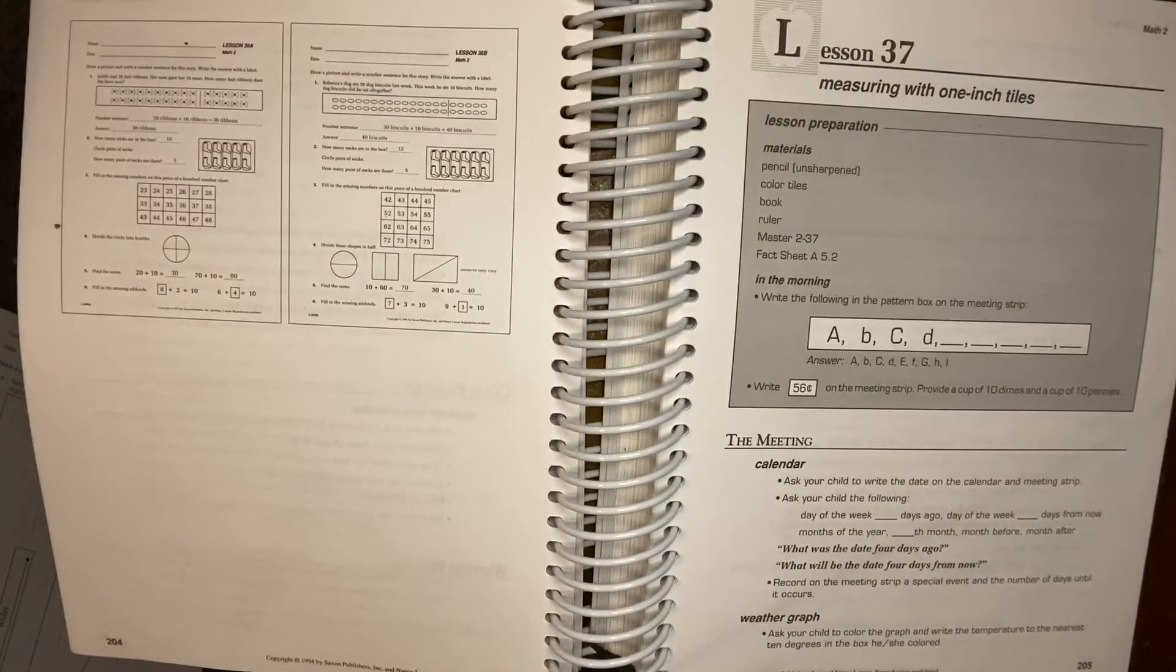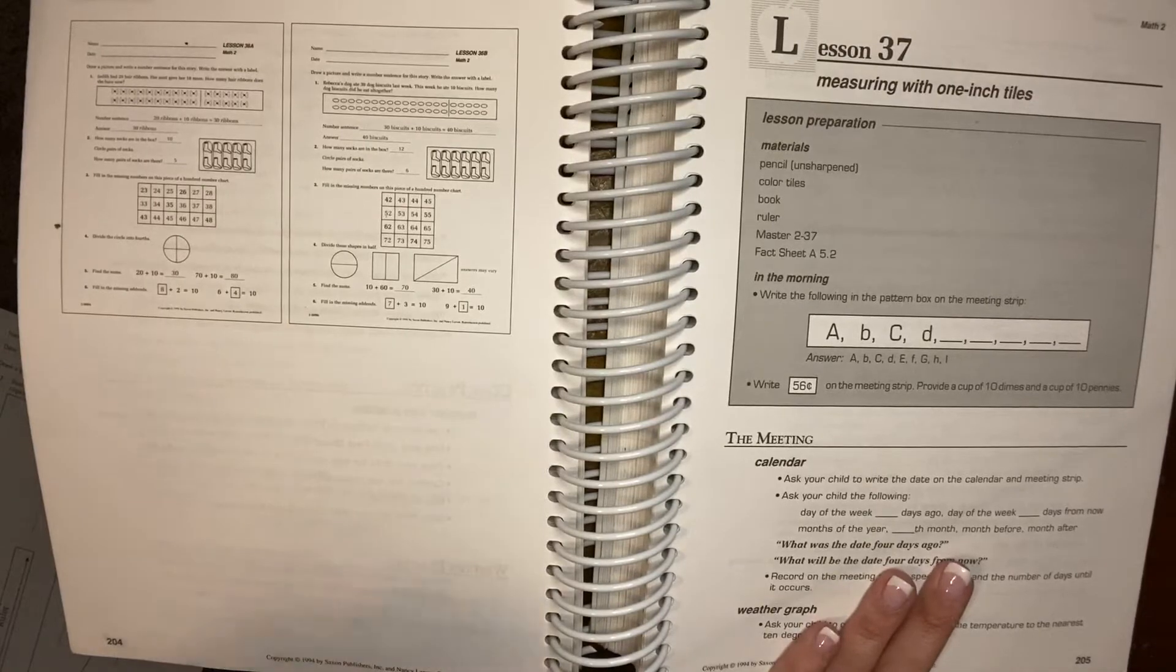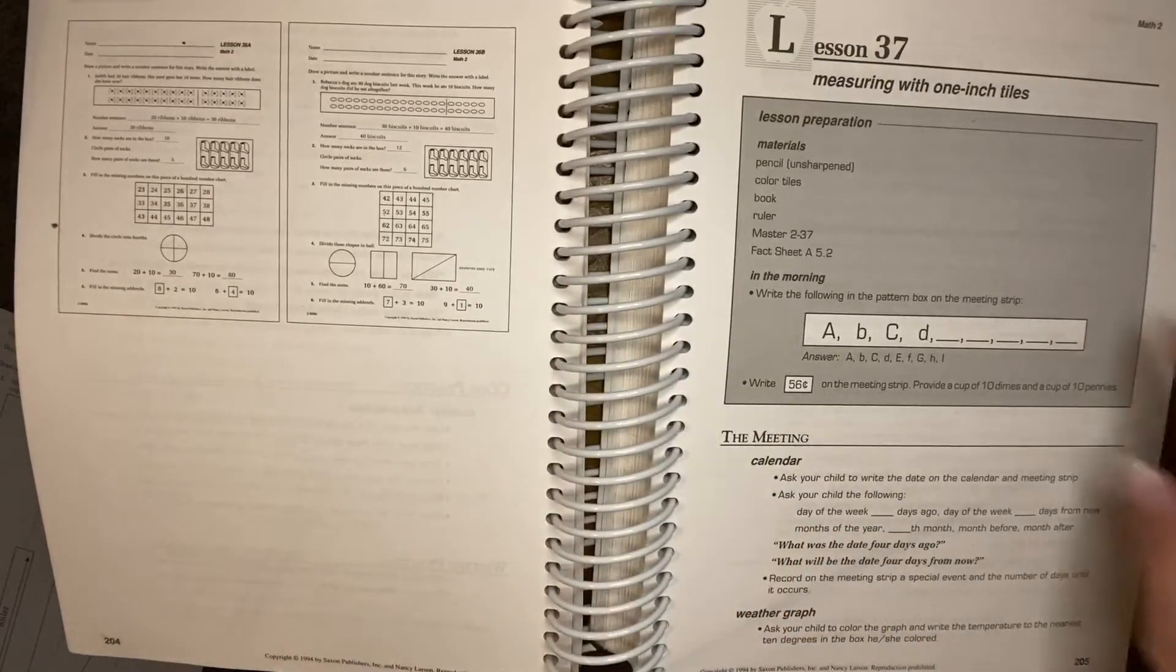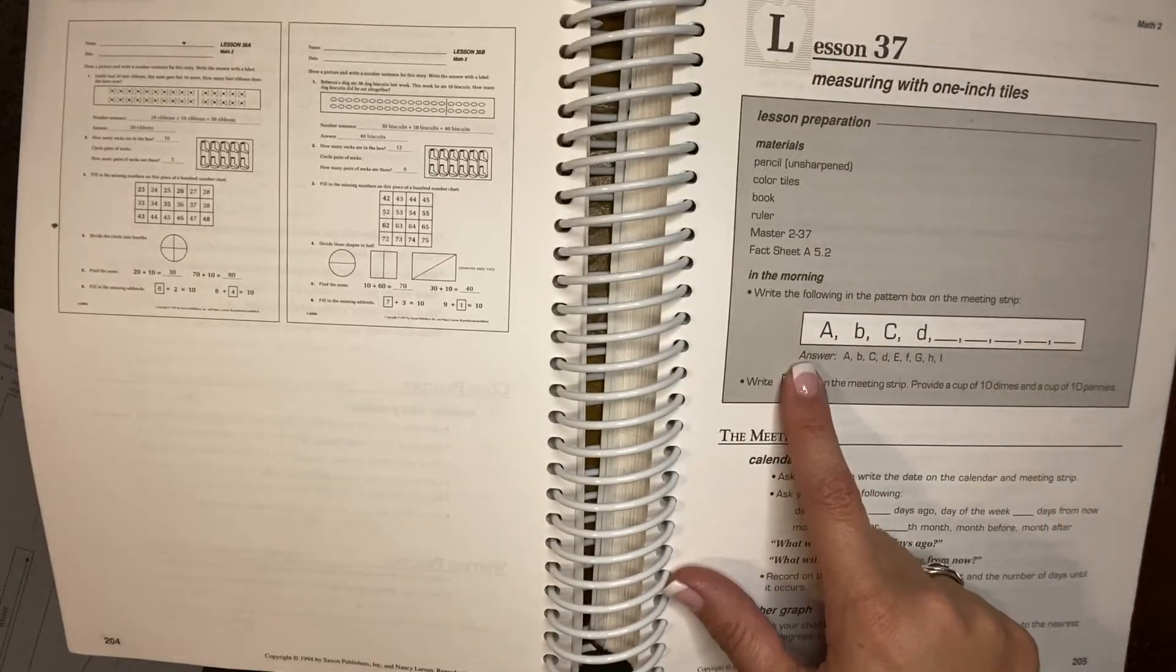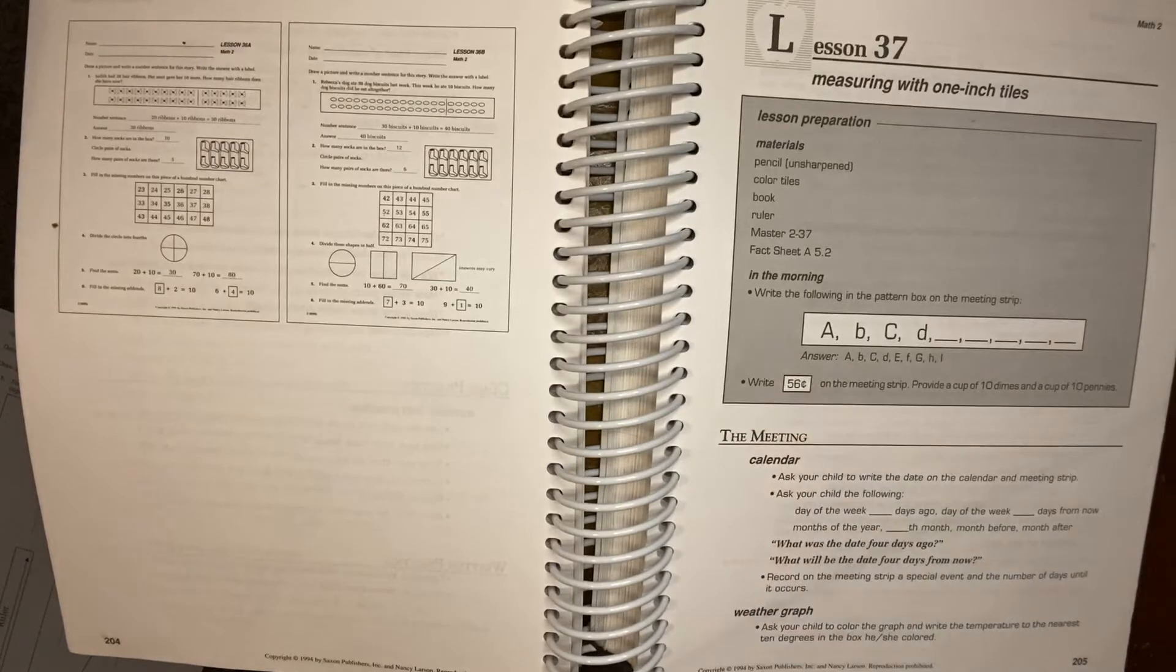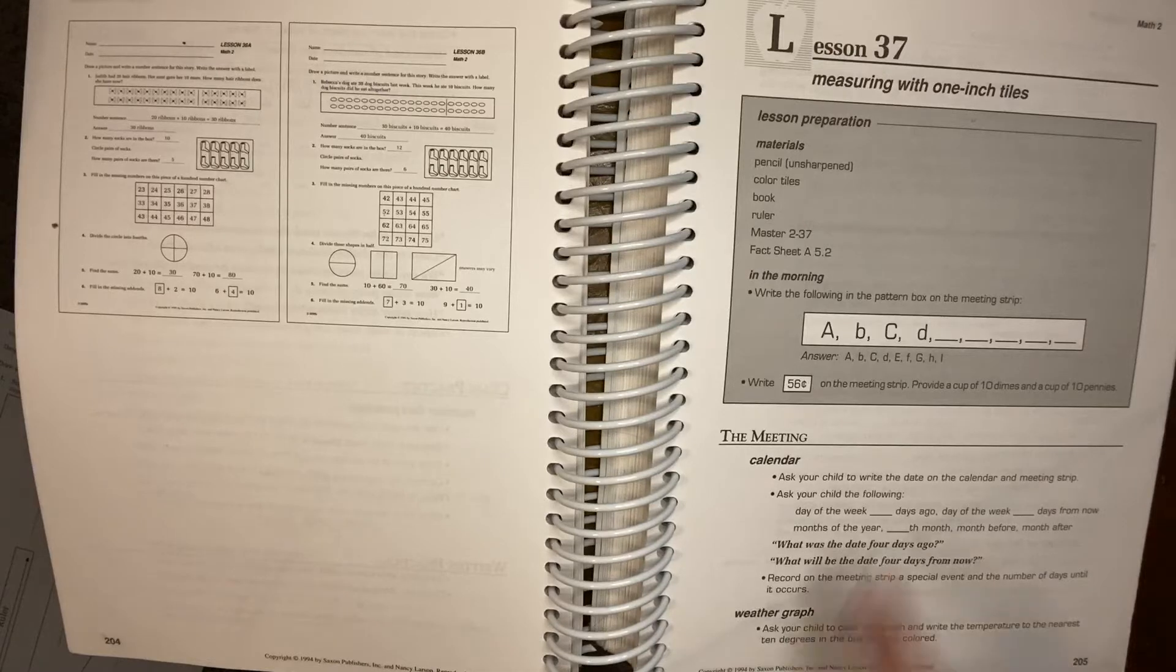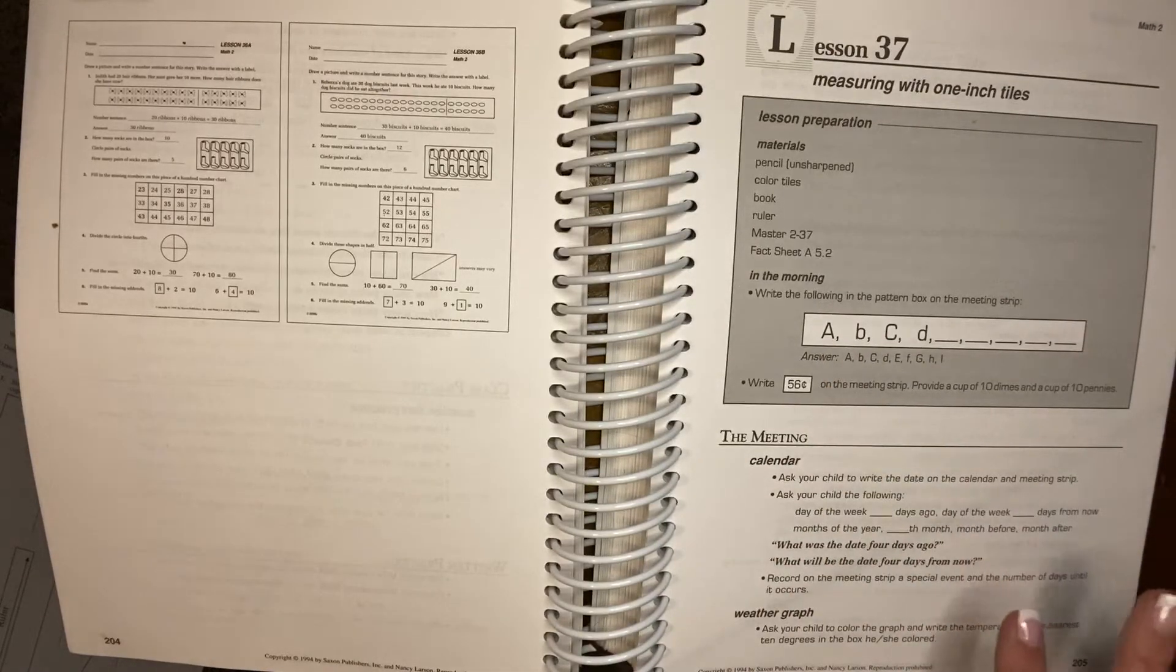So here you'll see I have it opened up to lesson 37, which is about where we are right now. And so starting off the lesson, you will see the materials you're going to need. And then we do not do the meeting book or the meeting strips or any of that type of stuff. I look over it, but if it's something he already knows, I skip it. If it's something he needs practice on, I'll go over it, but we don't write it down or anything.